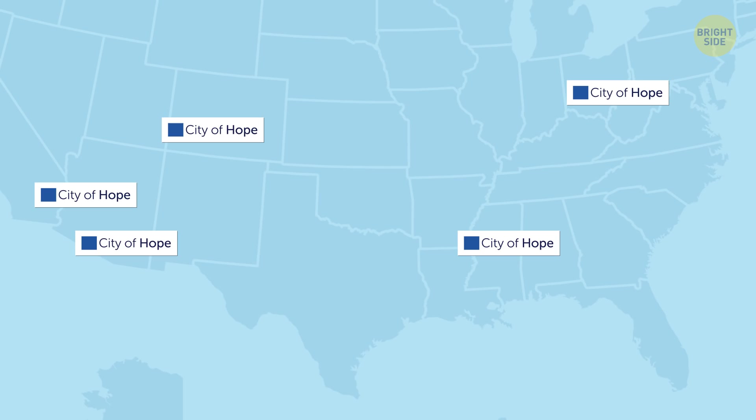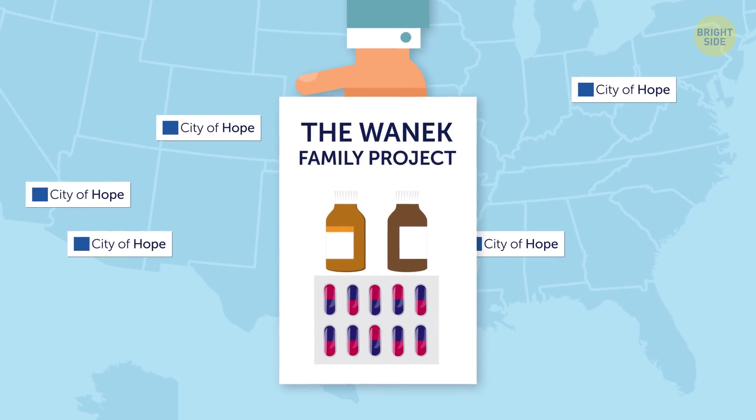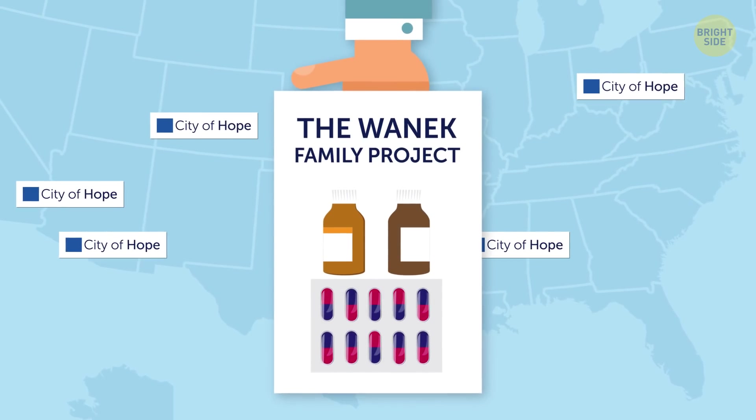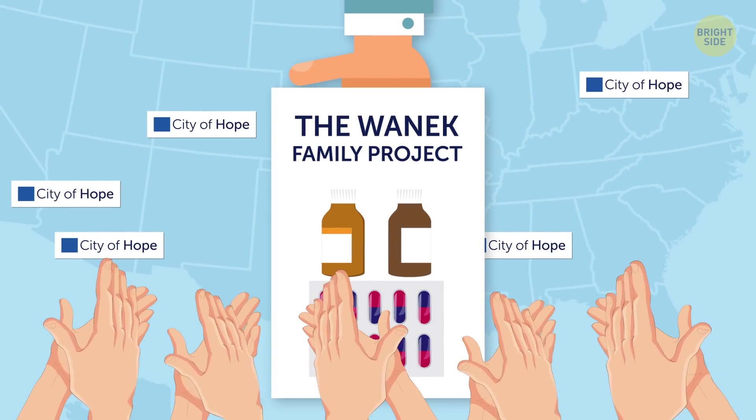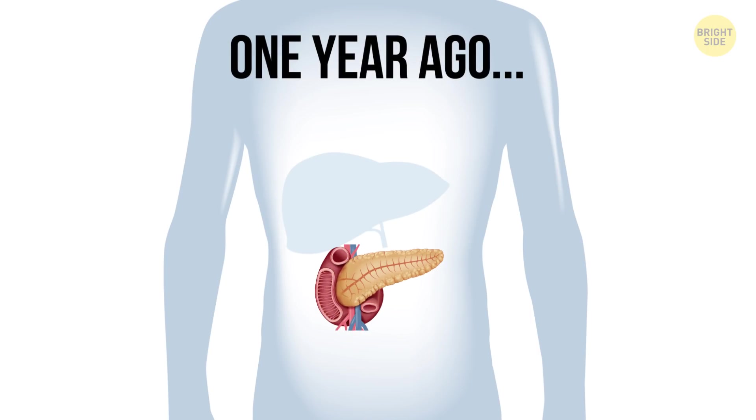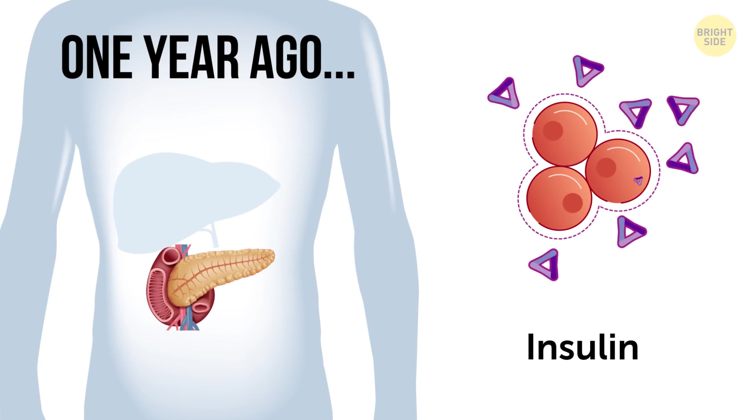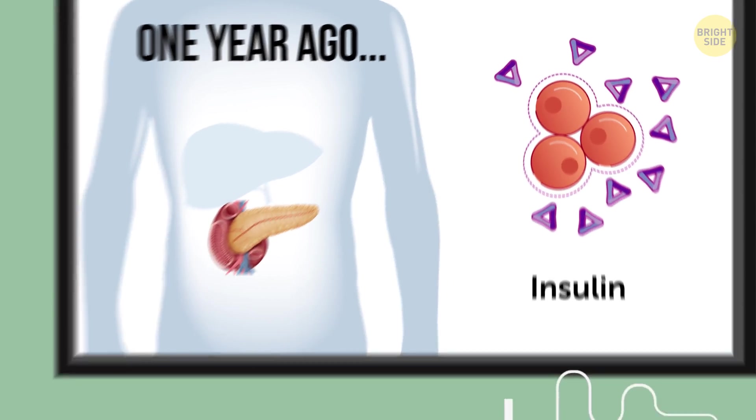But the good people from City of Hope, one of the leading medical centers in the US, don't think so. The promising research program, called the WANAC Family Project, aims to find a cure for this disease in the next 6 years. They've already made huge progress. One year ago, everyone thought that type 1 diabetes is an autoimmune disease, which means that it provokes a person's immune system to attack otherwise healthy cells in the pancreas. Those cells produce insulin, a lack of which is basically what diabetes is.